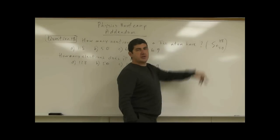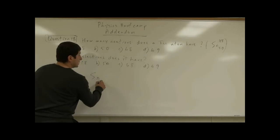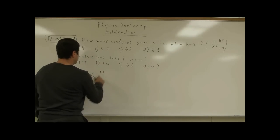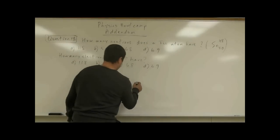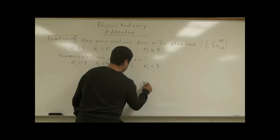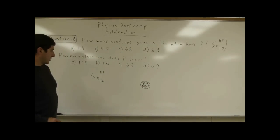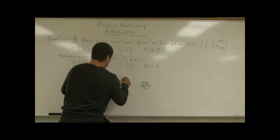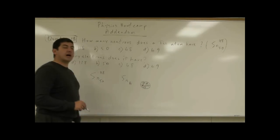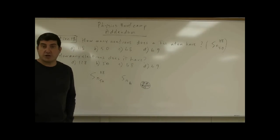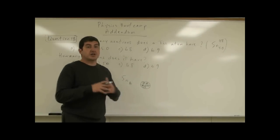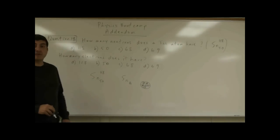So let's go over this notation and understand what it means. For Sn with 50 on the bottom and 118 on the top, the number on the bottom is how many protons an atom has. In the nucleus you have protons and neutrons. The bottom number, often written as A, is the atomic number, and it tells you how many protons — and therefore how much positive charge — the atom has, because protons are positively charged while neutrons are not.